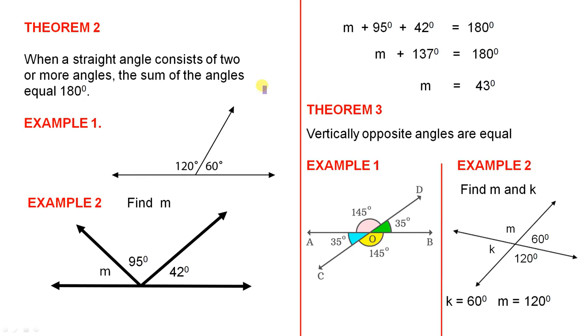Theorem 2. When a straight angle consists of two or more angles, the sum of the angles equal 180 degrees. So for example 1, here is a straight angle, and we have two angles here. If that's 120, that must be 60. You add those two up, you get 180 degrees. This is one specific example, and there are many others.